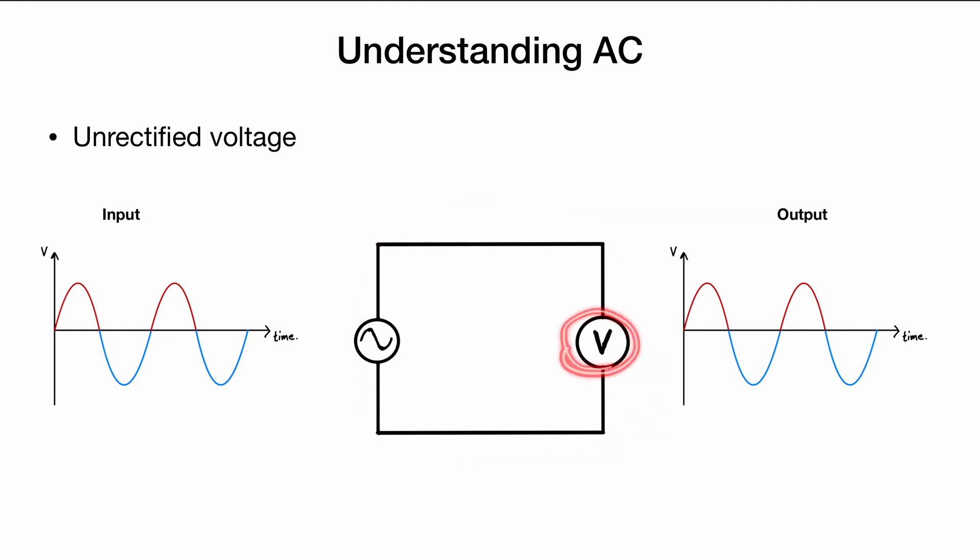What are we going to measure when we have such an input? Say counterclockwise, clockwise, counterclockwise, clockwise? Well, because there's no rectification, nothing is impeding the flow of electrons here. Well, what we're going to read out here is exactly what we input. We're going to end up with the same signal as we put in.